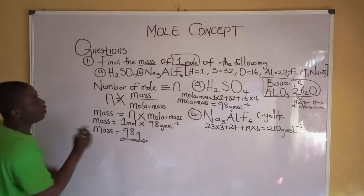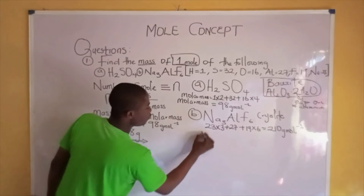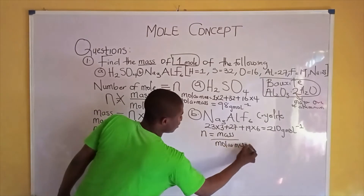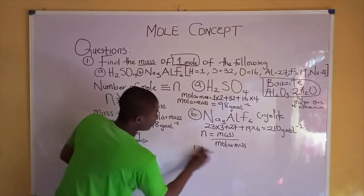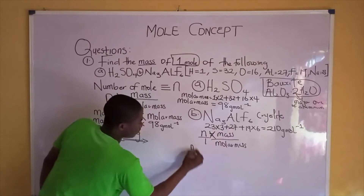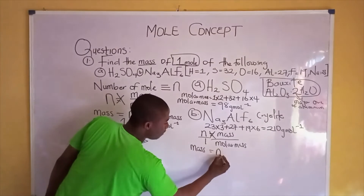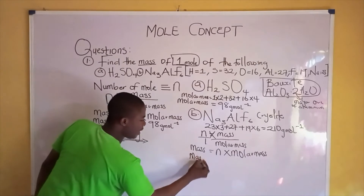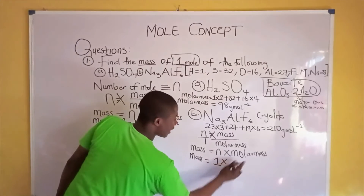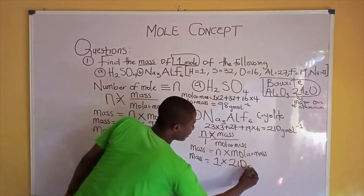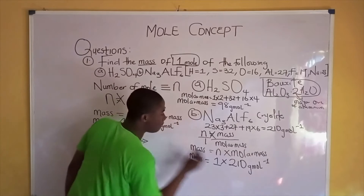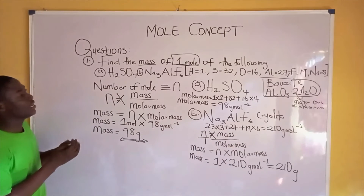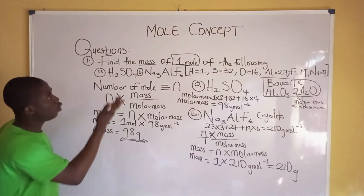Let's include the values into our formula. We need to get mass, so we apply: mass equals numbers of moles times molar mass. The numbers of moles given is 1 mole, times the molar mass of 210 g/mol. So the mass becomes 210 grams. This is one phase of solving problems on the mole concept.